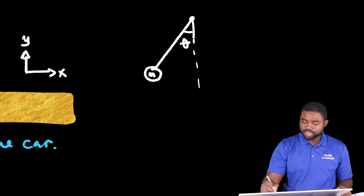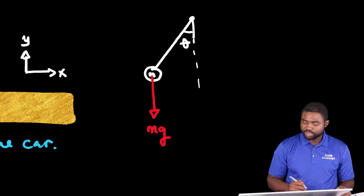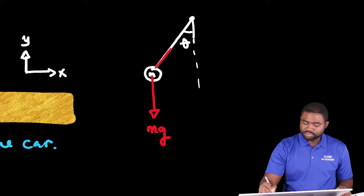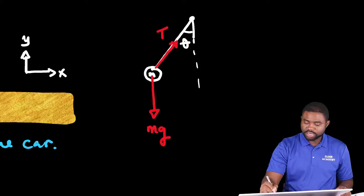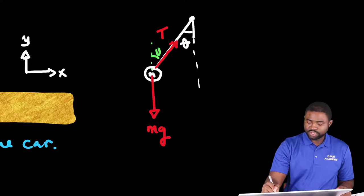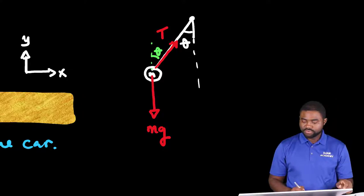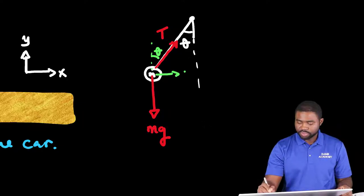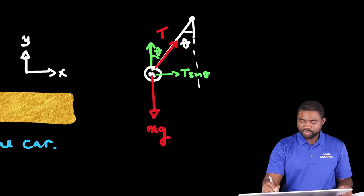So let's draw the free body diagram on the mass. The weight obviously acts vertically downwards. The tension in the string acts along the string and upwards. This angle right here is theta. So we can resolve the tension in the string into two components. This will be T sine theta and this will be T cosine theta.